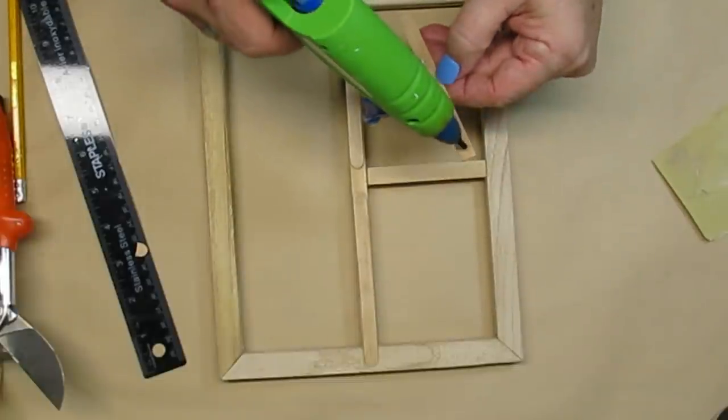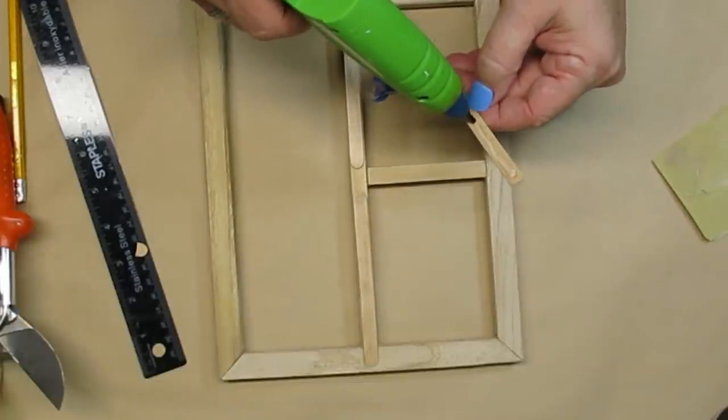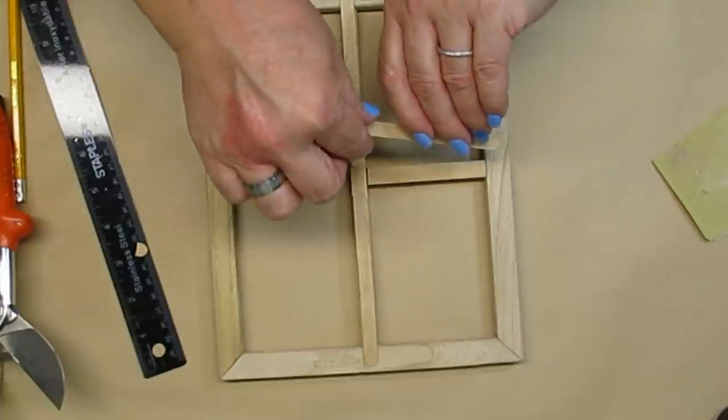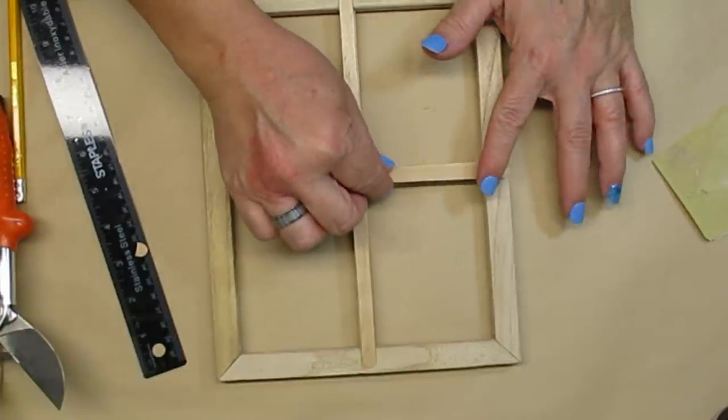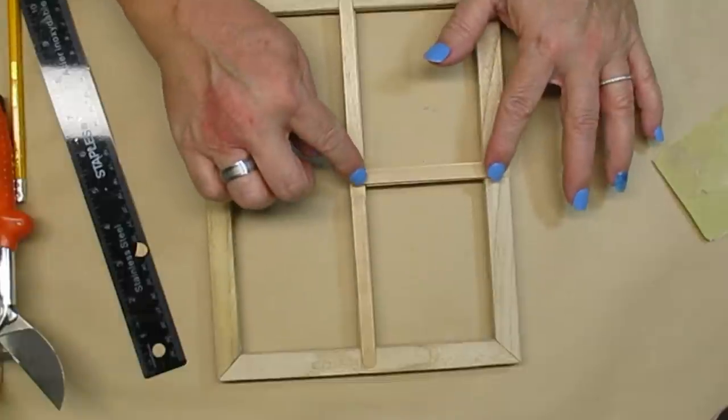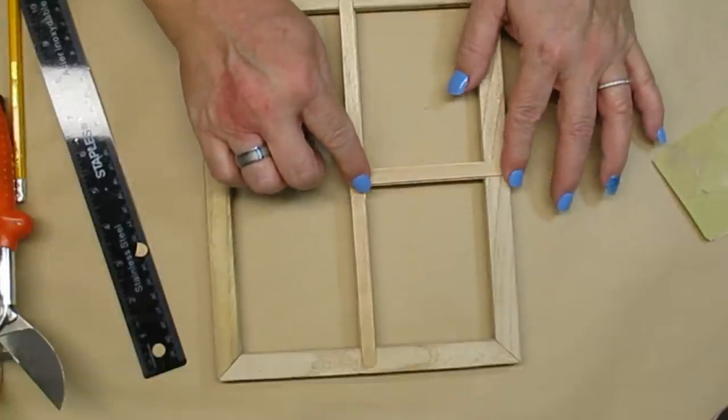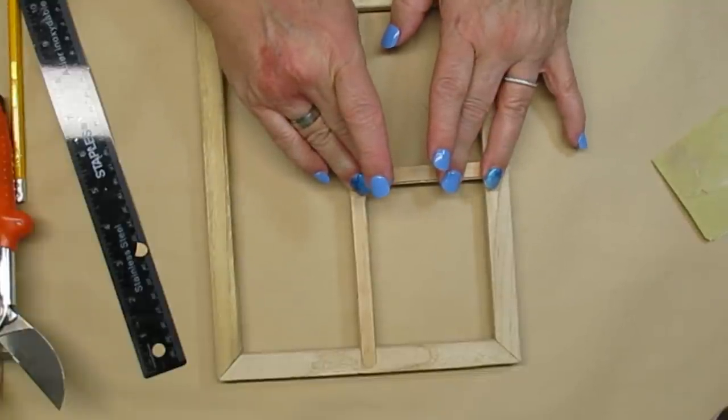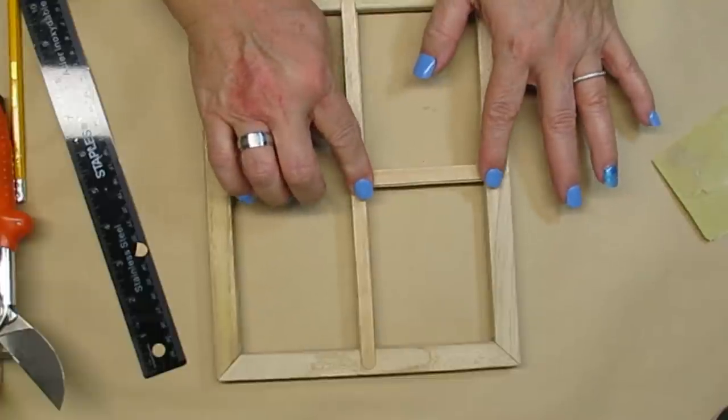Once I have the pieces wedged in, I'm just going to take a regular size popsicle stick, cut it down to size and use some hot glue to just make sure that it doesn't pop out. So the popsicle stick will just go over the frame on the outside, the inside dowel and then the little piece in the center.